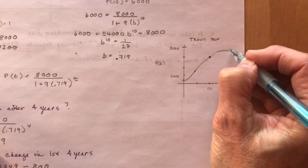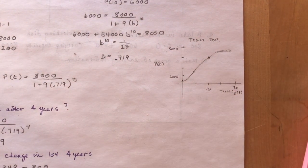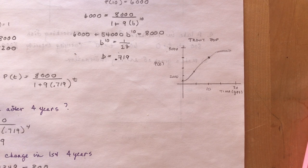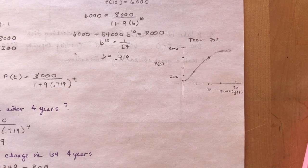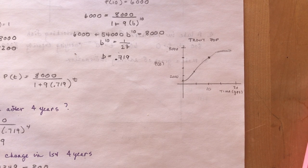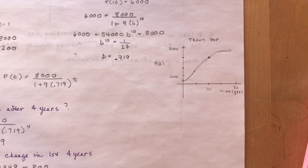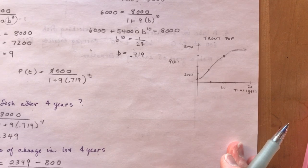So by 20 years, we should have reached our capacity. You can figure out how many fish it would be after 20 years. It might be a nice little calculation. My pencil just ran out of lead. Okay. So that's good because I'm done the lesson.